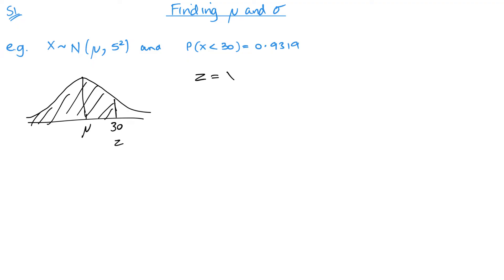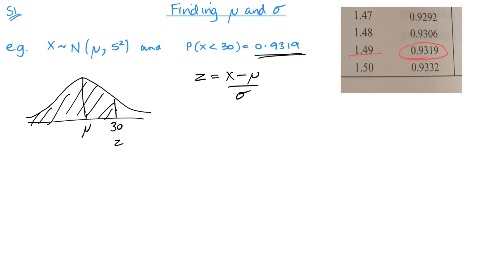So we know that Z equals X minus the mean over the standard deviation. Now I can look up this value and get my Z value. So we can see that 9319 is here, so 1.49 is my value of Z. So 1.49 equals 30 minus the mean over 5. So nice and easy here, we're timesing by 5. And then I want to take the mean to my left and I take the 7.45 to my right, and that gives me 22.55.